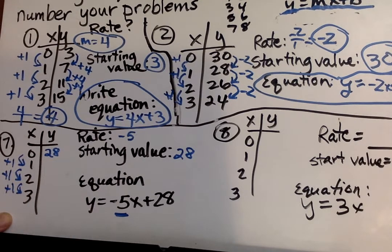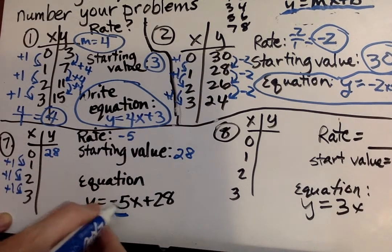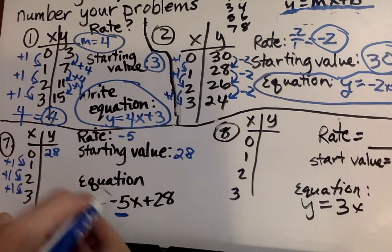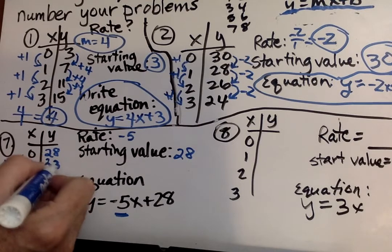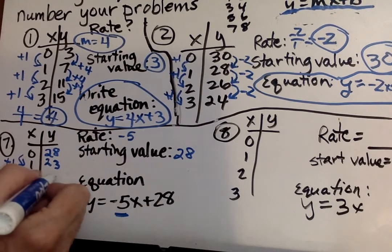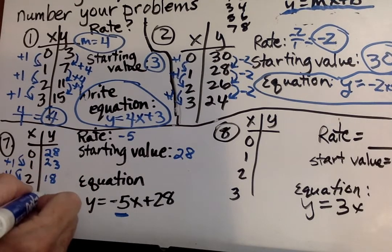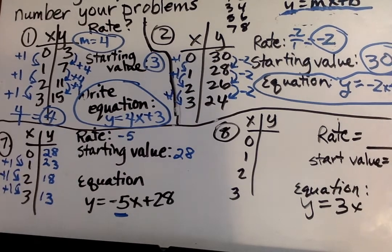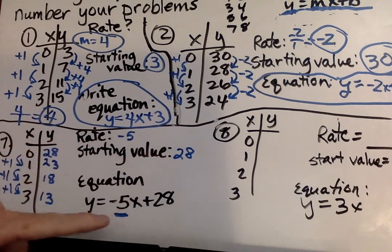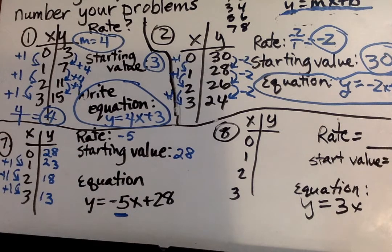And we see this is going by 1 each time. And we say each one of these, it's going minus 5. So 28 minus 5, 23. And again, minus 5, and minus 5. And you're done. Fill out the table, have your rate, your starting value, and your equation is already listed there.